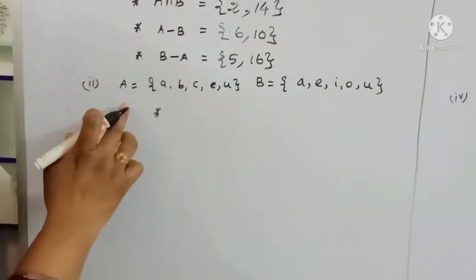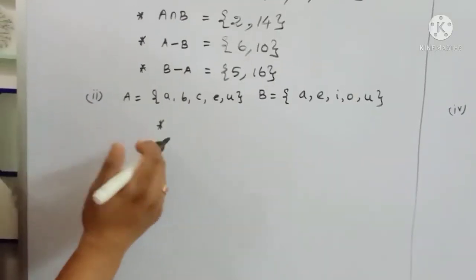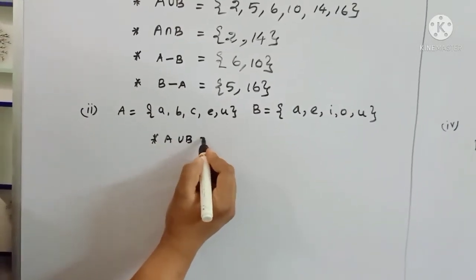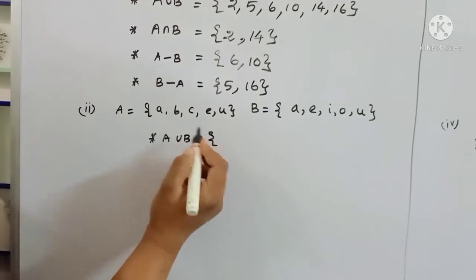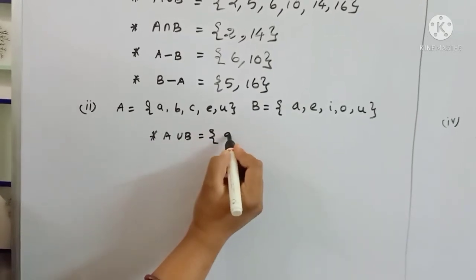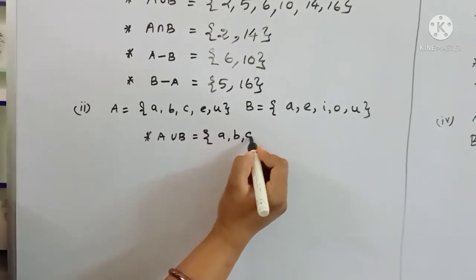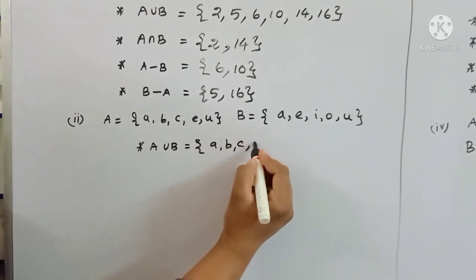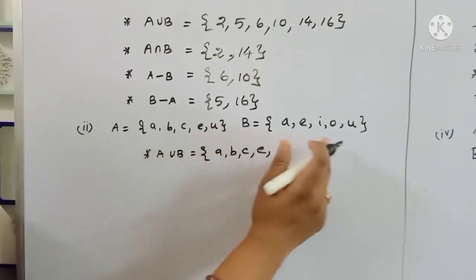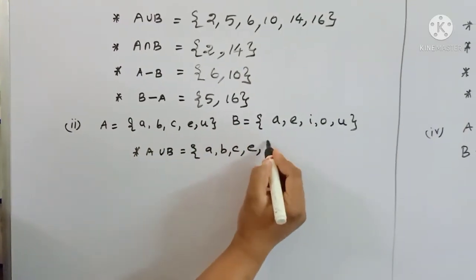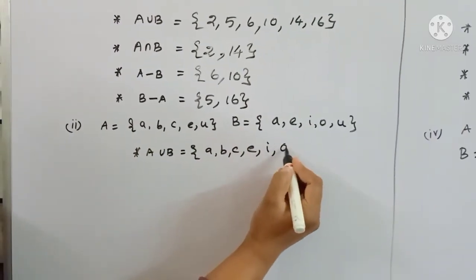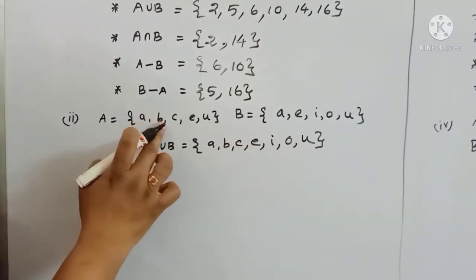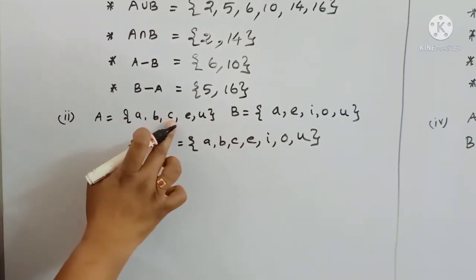Next, the second subdivision: A union B. We need to find the union, so we join all elements from A and B.